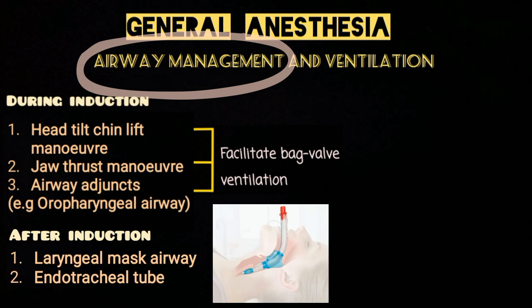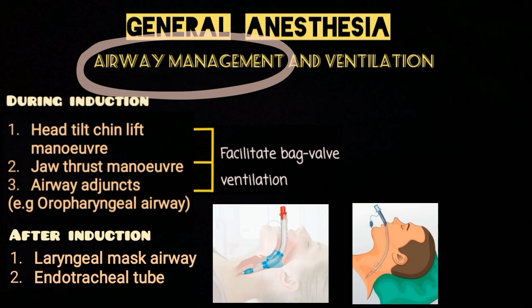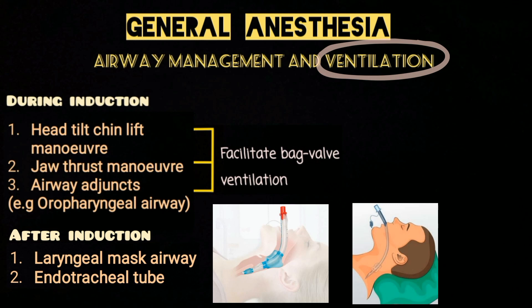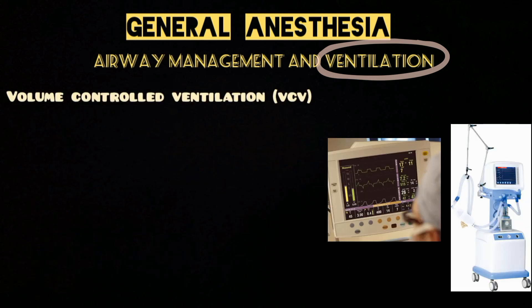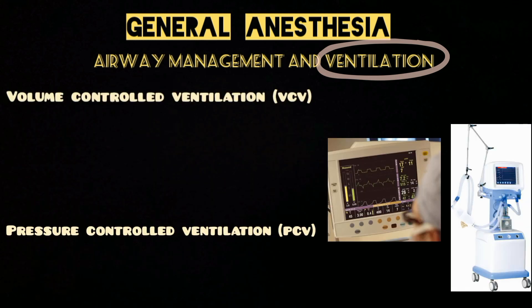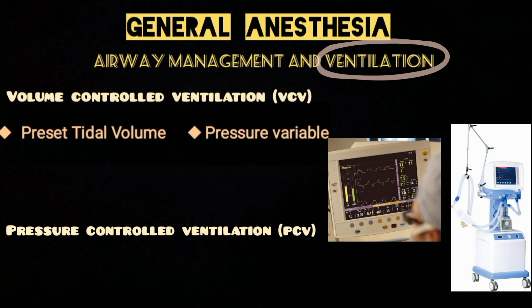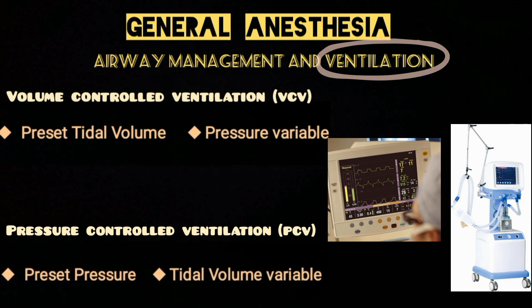After anesthesia induction, a laryngeal mask airway or endotracheal tube is inserted to allow the patient to breathe spontaneously. If spontaneous ventilation is inadequate or the patient is not breathing at all, mechanical ventilation is provided — either by volume-controlled ventilation (VCV) or pressure-controlled ventilation (PCV). In VCV, a preset volume of air is delivered irrespective of airway pressure, whereas in PCV the ventilator maintains a set airway pressure so the tidal volume can vary depending on patient characteristics.